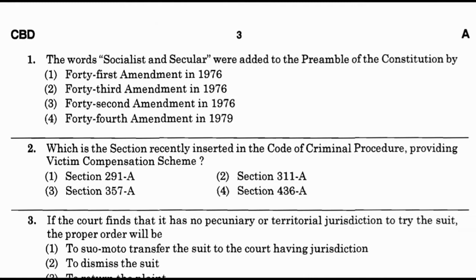Question number 2: Which section was recently inserted in the Code of Criminal Procedure providing the victim compensation scheme? Option 1: Section 291A, option 2: Section 311A, option 3: Section 357A, option 4: Section 436A. The answer is option 3 — Section 357A.